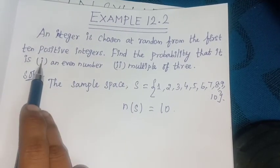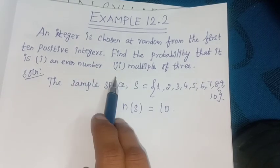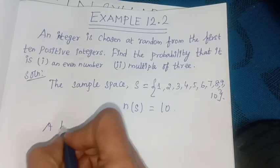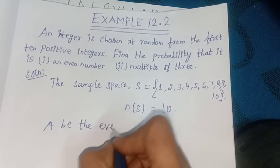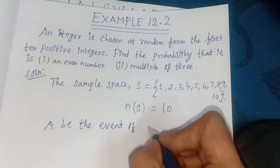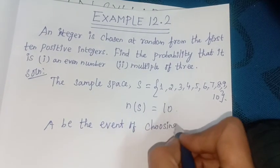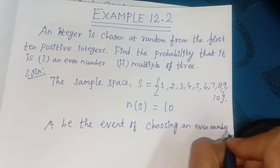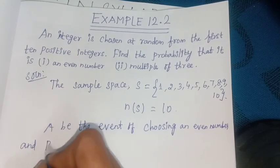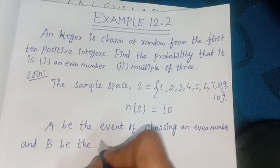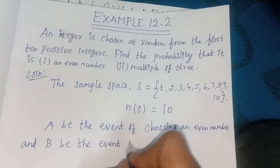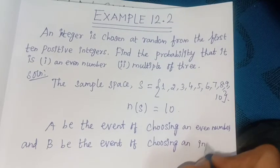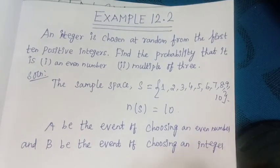So number one thing is an even number and second is multiple of 3. So first, let A be the event of choosing an even number and B be the event of choosing an integer multiple of 3.